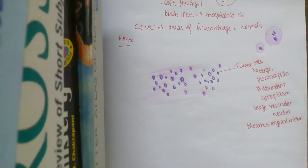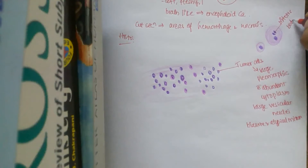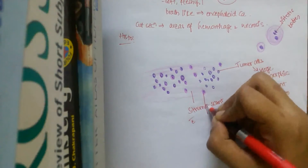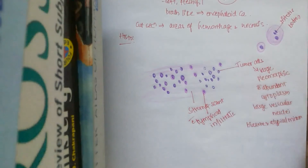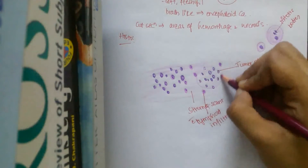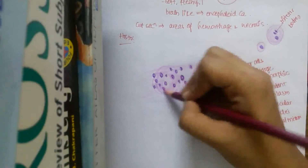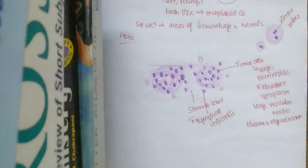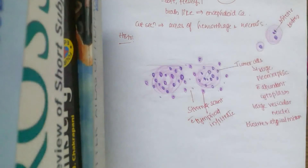These are the mitotic bodies. The stroma is very scanty with lymphoid infiltrate. These are the tumour cells in a panel, and the cells surrounding them are nothing but lymphocytes. There are very few stromal cells. This is the summary of medullary carcinoma of the breast.